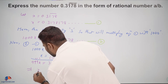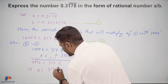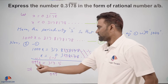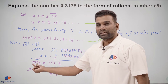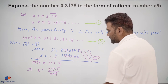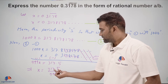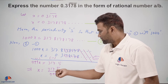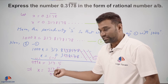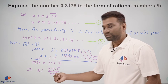That implies x equals 317.5 upon 999. Since there is still a decimal point here — the decimal point is after 1 digit — we will multiply both numerator and denominator by 10.